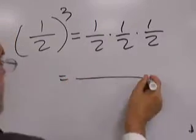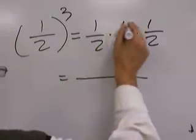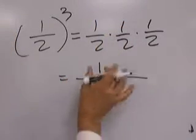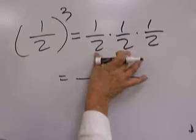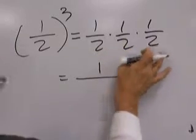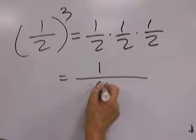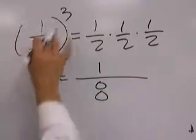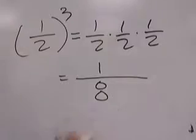On the top of that, though, is one times one times one, which is one. And the bottom is two times two, which is four times two, which is eight. So one-half to the third power is one-eighth.